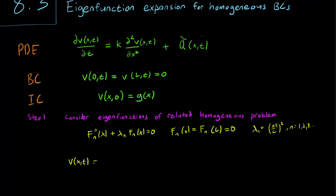So V(x,t) equals sum n equals 1 to infinity of a_n(t)*F_n(x). And this is known as the eigenfunction expansion of V(x,t).